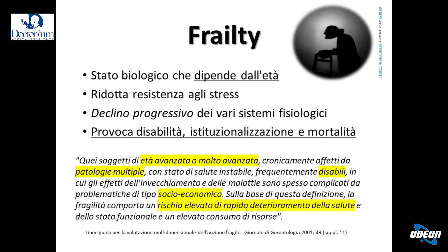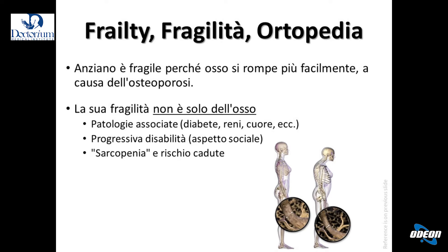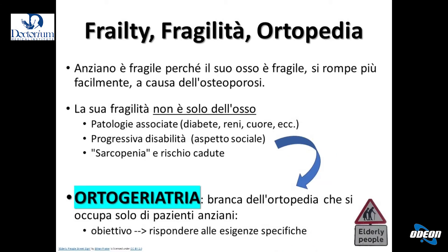Frailty è invece un concetto più complesso. È una fragilità a tutto tondo: la persona anziana è fragile perché ha molte malattie, può essere disabile. Non di rado questa fragilità si associa a uno stato socio-economico precario. Tutti questi fattori lo portano ad essere più a rischio di patologie gravi, con aggravamento della disabilità, fino ad arrivare a un aumento della mortalità e delle necessità di istituzionalizzazione. C'è quindi una fragilità legata all'osteoporosi e una fragilità multisistemica che coinvolge la persona nella sua interezza. Ed è in questo frangente che nasce l'ortogeriatria, quella branca dell'ortopedia che affronta le problematiche specifiche del paziente anziano.